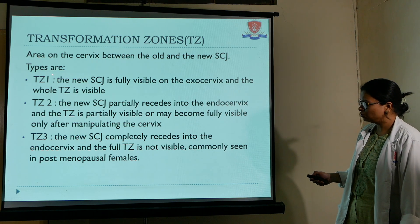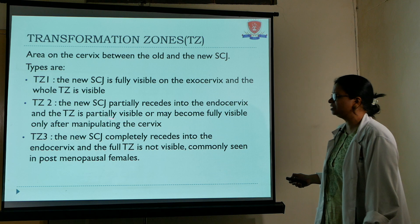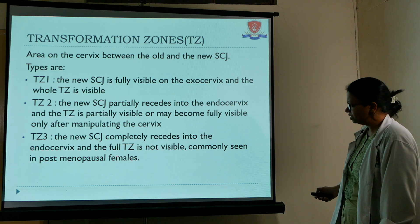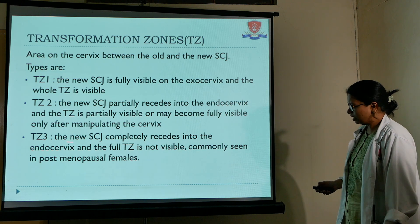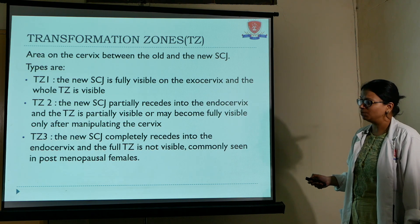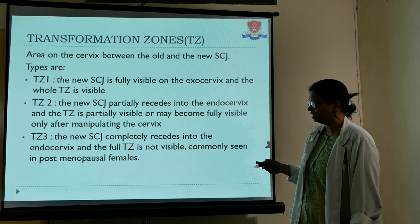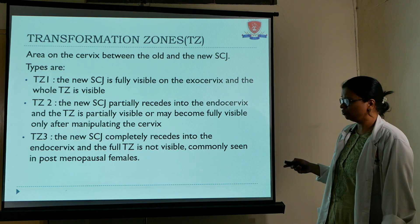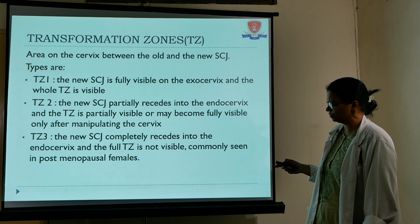Transformation zone 3: the new squamous columnar junction completely recedes into the endocervix and the full transformation zone is not visible — commonly seen in post-menopausal females where the endocervix shifts further inside, and the new squamous columnar junction also shifts inside. Colposcopy is almost inadequate in transformation zone 3.